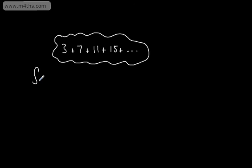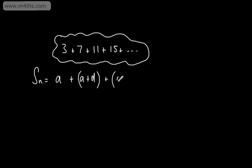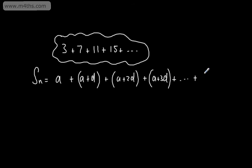We can say that the sum of n terms is going to be equal to a, the first term, plus a plus d, which is the second term, plus a plus 2d, which is the third term, plus a plus 3d, which is the fourth term, right the way up to the nth term, which is a plus (n minus 1) multiplied by d.